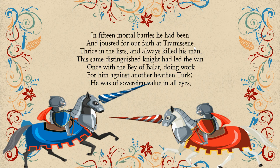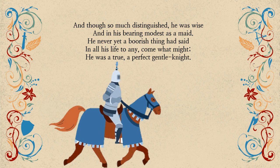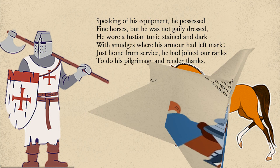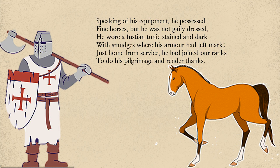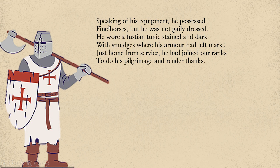"He was of sovereign value in all eyes." Back to the knight: "And though so much distinguished, he was wise and in his bearing modest as a maid." He is such a modest character. "And never yet a boorish thing he said in all his life to any, come what might — he was a true, perfect, gentle knight." About his appearance and equipment: he possessed fine horses, but he was not gaily dressed — gaily meaning in a colorful, fashionable way. He wore a fustian tunic, stained and dark, but smudged where his armor had left a mark. Just home from service, he had joined their ranks, so he had no time to change before doing his pilgrimage.